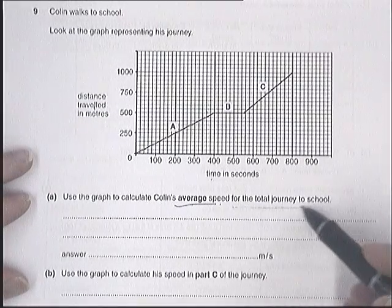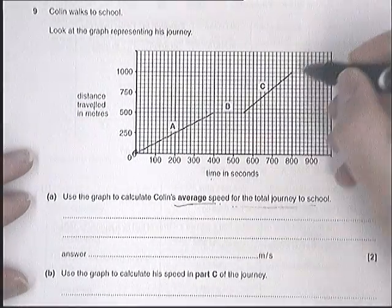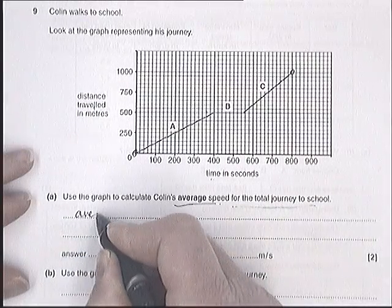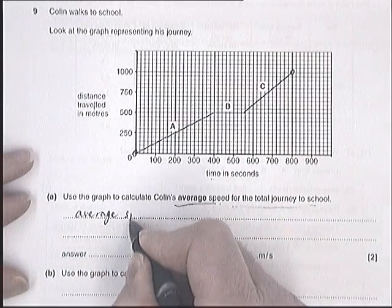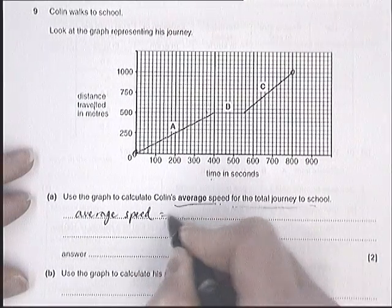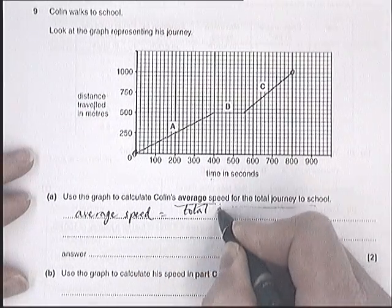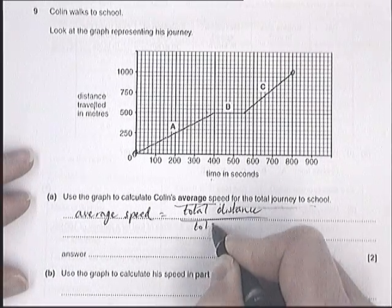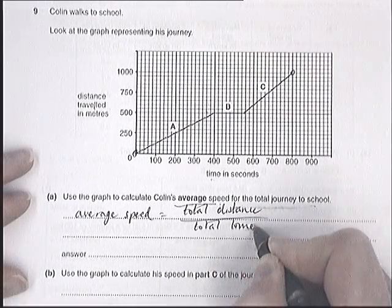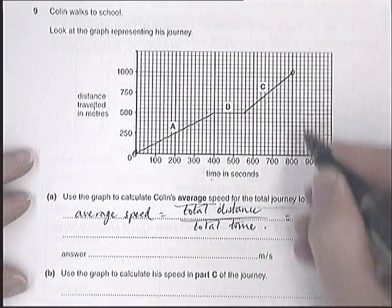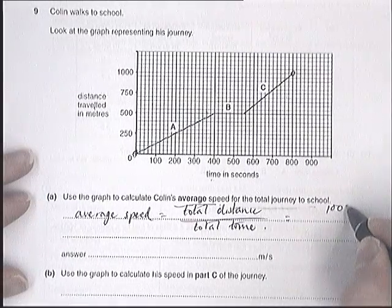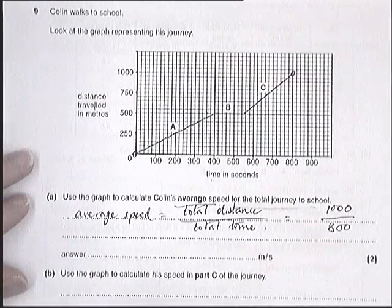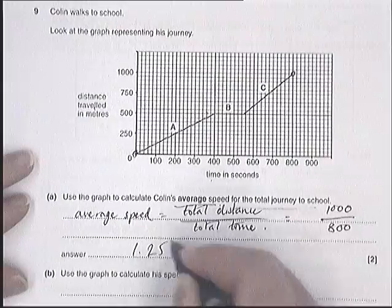So it's average speed for the total journey, from 0 metres to 1,000 metres. In the equation sheet, you've got the equation: average speed equals total distance by total time. So that's an average. It's 1,000 metres by 800 seconds. It's 1.25, and the unit is there.